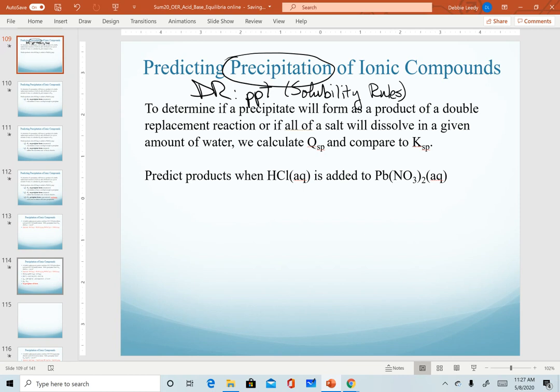To determine whether we'll actually get precipitation or not, we are going to use our Q versus K relationships. As our practice problem on the next screen, we are going to predict the products when we add HCl to lead two nitrate. We'll go ahead and write this equation now.